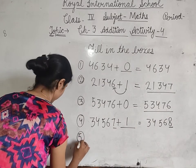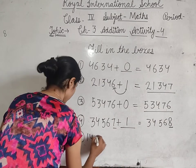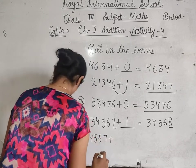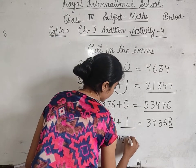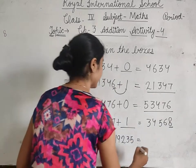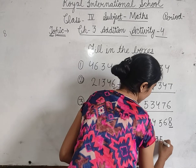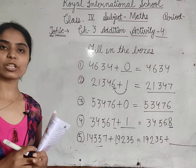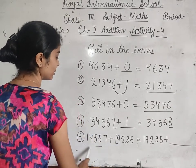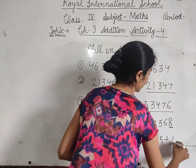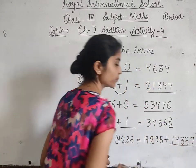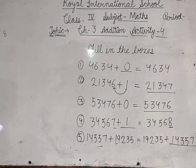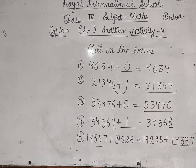Then fifth one: 14,357 plus 19,235 equals to 19,235 plus dash. यह commutative property है — order change करो, sum same रहता है। So the missing number is 14,357. जल्दी से note down करेंगे।